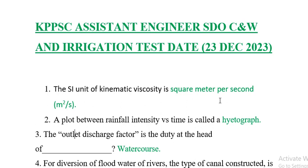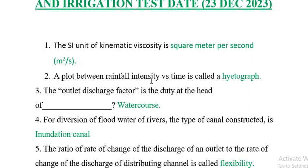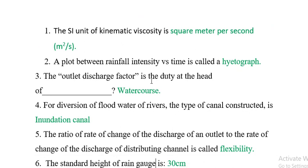The SI unit of kinematic viscosity is square meter per second. Question 2: A plot between rainfall intensity versus time is called a hyetograph. Question 3: The outlet discharge factor is the duty at the head of the distributary channel.